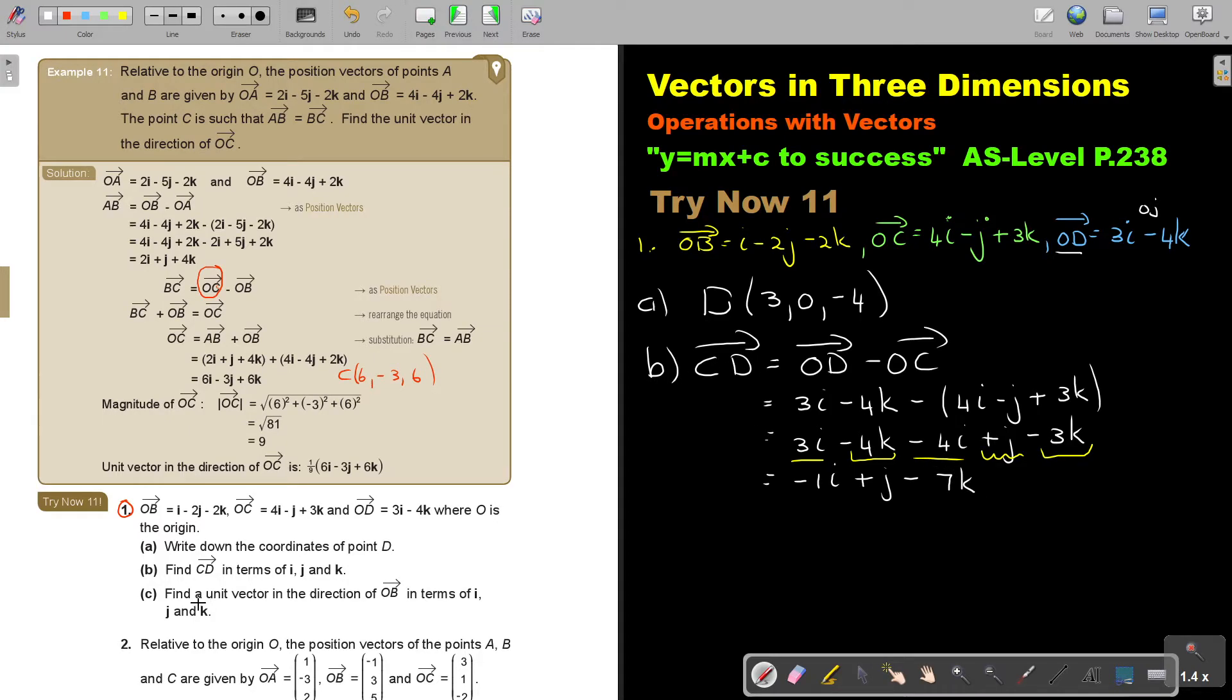Now find a unit vector in the direction of OB in terms of i, j, and k. This is actually easier than the previous problem.